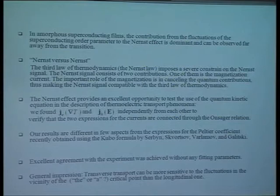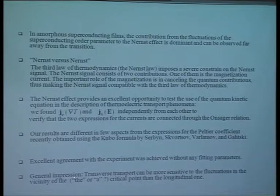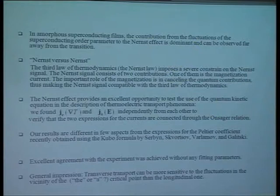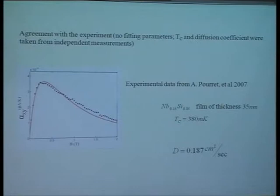We get excellent agreement with the experiment without any fitting parameters. My general impression is that transverse transport is much more sensitive to fluctuation phenomena compared to the longitudinal one. Here is how the fit of the experimental data looks — this is the Peltier coefficient. One takes the only parameter which is Tc, taken from measurement, and the diffusion coefficient, also taken from experimental data. Then after that you make your theoretical fit, and here is the experiment — all without any fitting parameters.